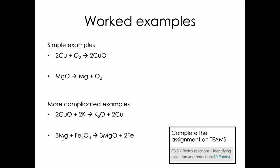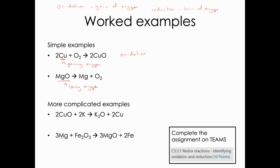Let's look at some worked examples. Oxidation is the gain of oxygen; reduction is the loss of oxygen. In the first example with copper, the copper on the left-hand side doesn't have oxygen but it does on the right-hand side, so the copper is gaining oxygen — therefore this reaction is oxidation. In the second example, magnesium oxide gives magnesium plus oxygen, so the magnesium oxide is losing oxygen — therefore it's reduction.